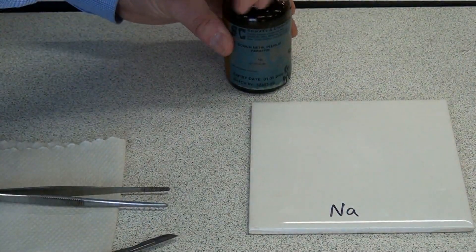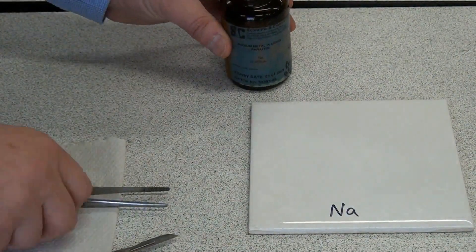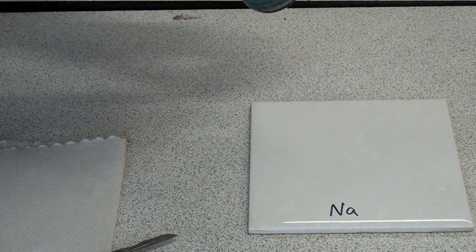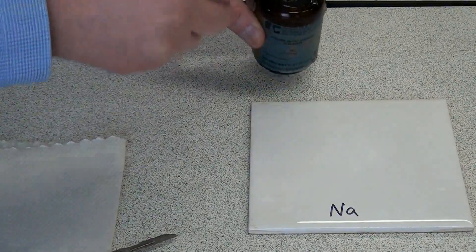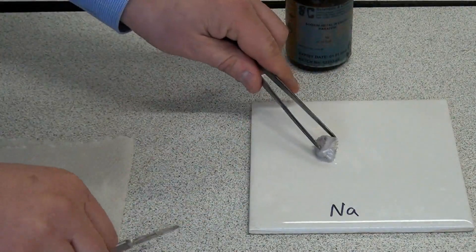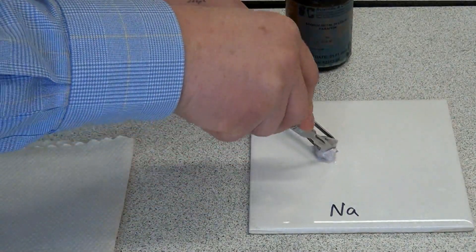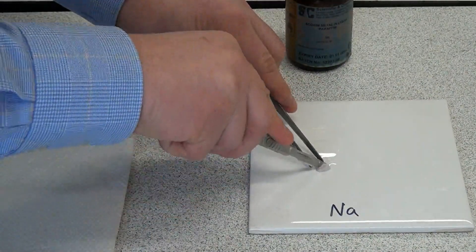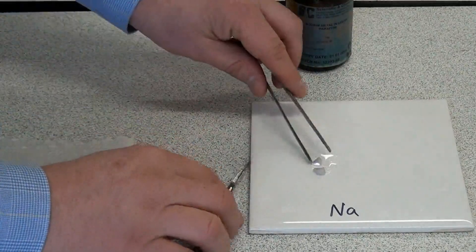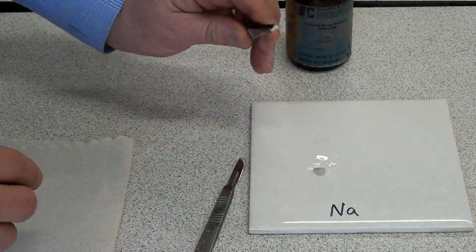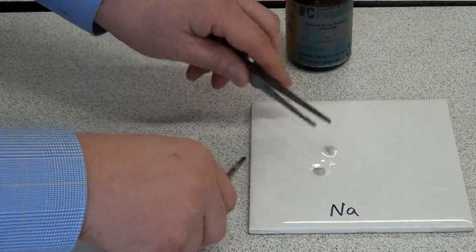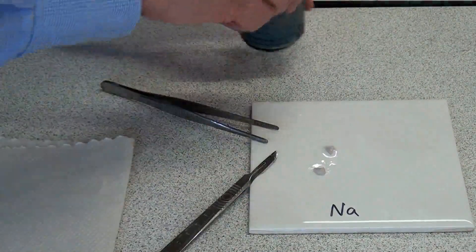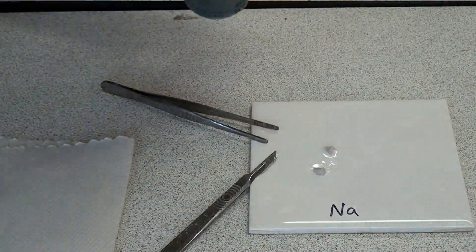Now I'm going to cut a piece of sodium, which is the second alkaline metal as we go down group one. This time when I cut through it, you can see it slices much more easily, it's softer than the lithium. Once again it's shiny on the inside, but it's gone much duller on the outside because it's reacted with the oxygen in air.